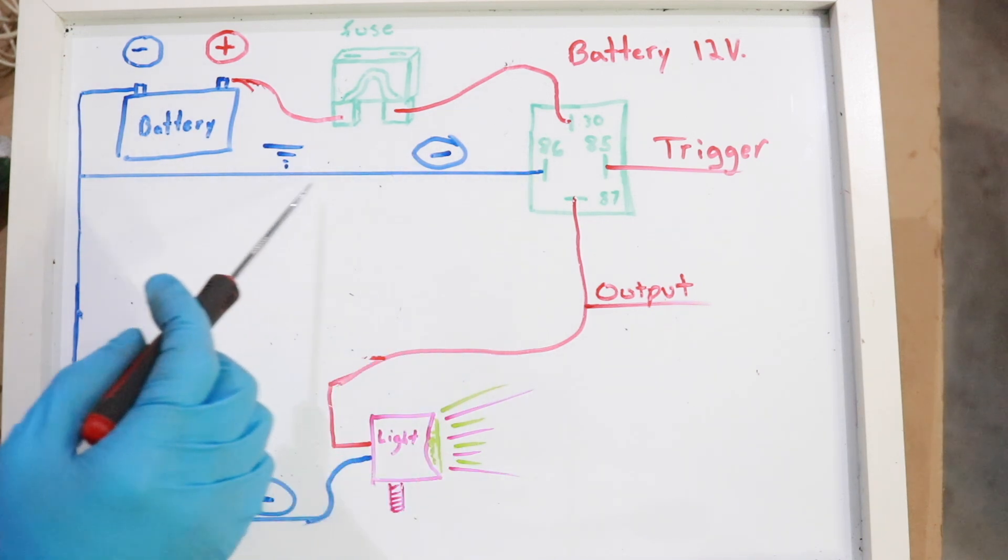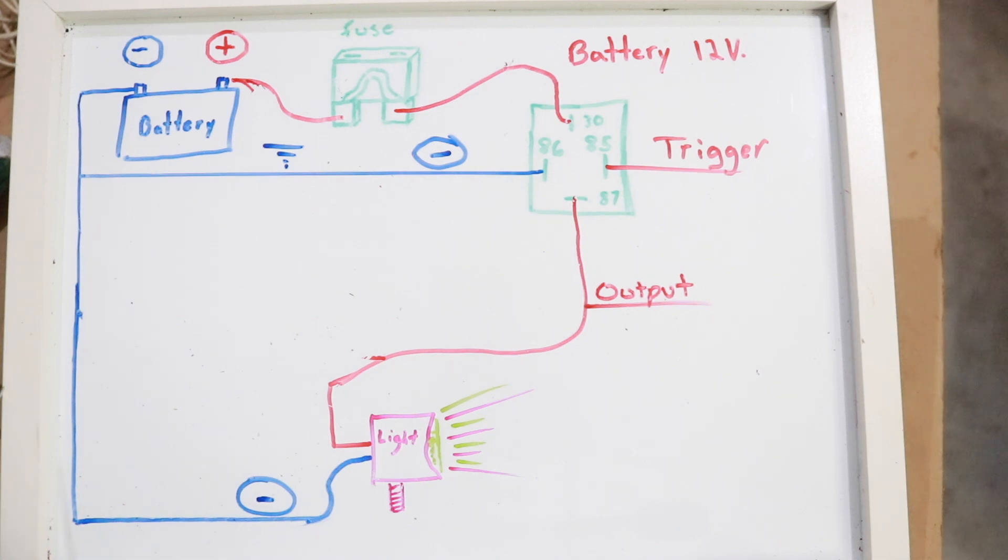86 is the common ground, so you would need to ground this line to the frame or the negative terminal of the battery, preferably the battery, of course.